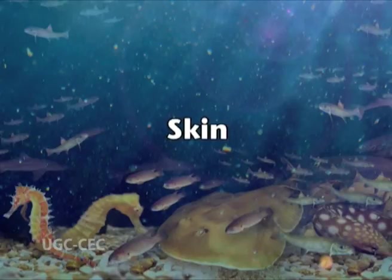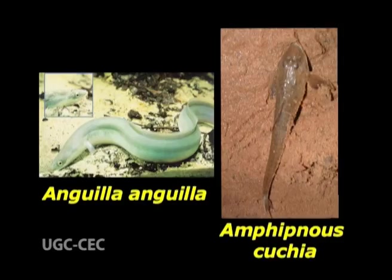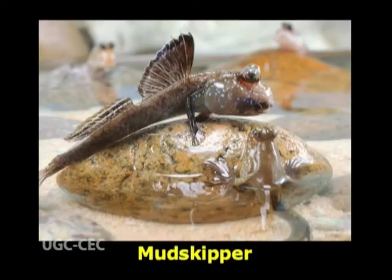Examples of accessory respiratory organs — skin: common eels often migrate over land through damp vegetation and can respire cutaneously both in air and in water. Mudskipper larvae and embryos perform respiration through thin, moist, vascular, and permeable skin.